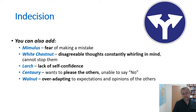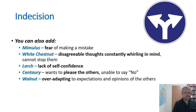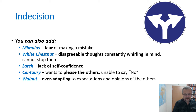We can also add Mimulus for fear of making a decision or making a mistake, White Chestnut when there are many thoughts whirling in the mind that cannot be stopped, Larch for when indecision is caused by lack of self-confidence, Centaury for people who may know what is right for them but do not want to displease others — they fear refusal and are unable to say no — and Walnut for those who over-adapt to other people's expectations and opinions and may do something other than what they really want.